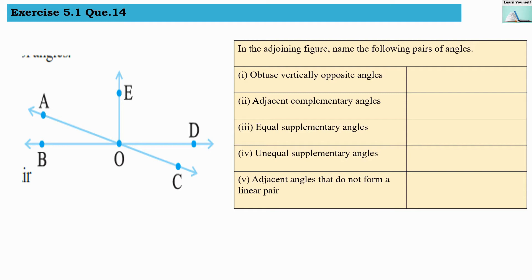First, obtuse vertically opposite angles. So we have to find out vertically opposite angles. In this figure, these angles are vertically opposite to each other.